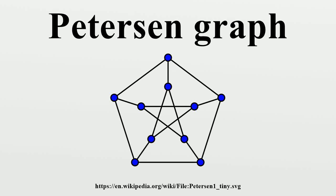In the mathematical field of graph theory, the Petersen graph is an undirected graph with 10 vertices and 15 edges. It is a small graph that serves as a useful example and counter-example for many problems in graph theory. The Petersen graph is named after Julius Petersen,